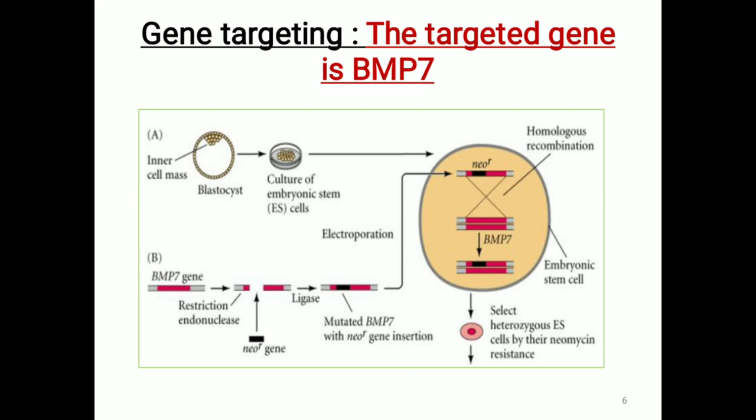Next I will explain the gene targeting method with the help of an illustration. In this illustration, the targeted gene is BMP7. In step A, we are culturing the embryonic stem cell. In step B, we need to create an artificial BMP7 gene, and we will introduce a selectable marker gene — that is the NeoR gene, meaning neomycin resistant gene — into the artificially created BMP7 gene with the help of restriction endonuclease and ligase, to get a mutated BMP7 with neomycin resistant gene insertion. Then we will introduce that mutated BMP7 into the embryonic stem cell by electroporation. In the embryonic stem cell, homologous recombination takes place and knocks out the wild type BMP7 gene.